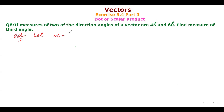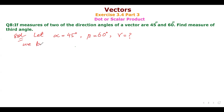So the direction angles represent alpha as 45 degrees and beta as 60 degrees. The third angle, gamma, is unknown and we will find it out.